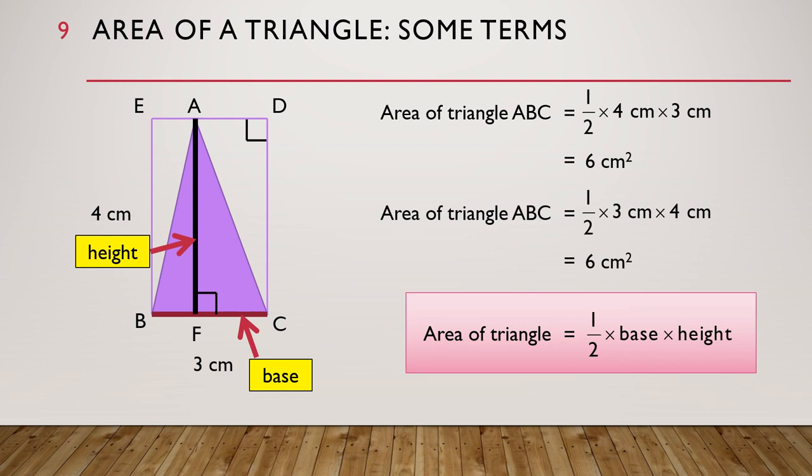We can also write the area as half times 3cm times 4cm. So if we introduce the terms base and height of the triangle, then we can see that the area of a triangle is equal to half times the base times the height.